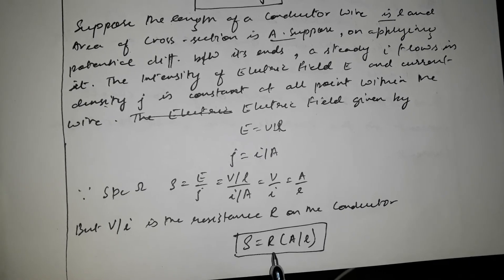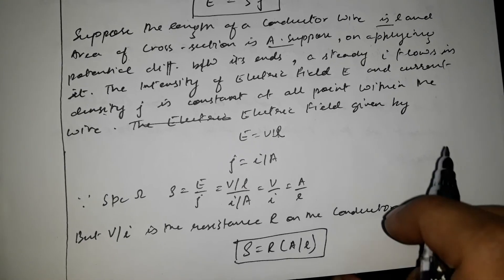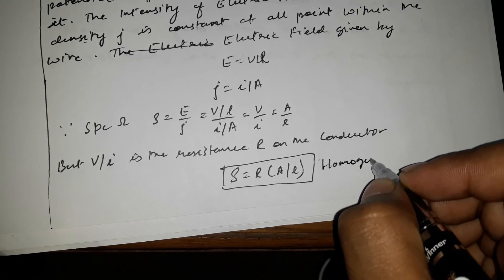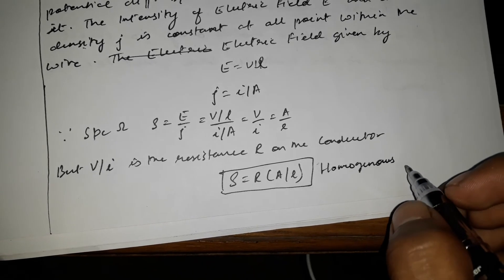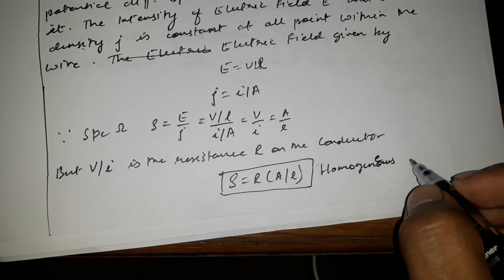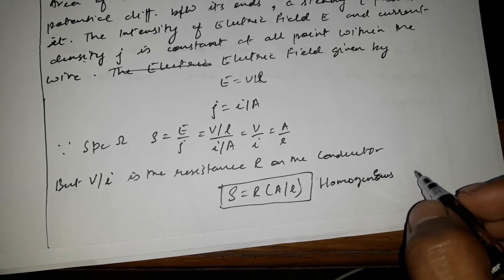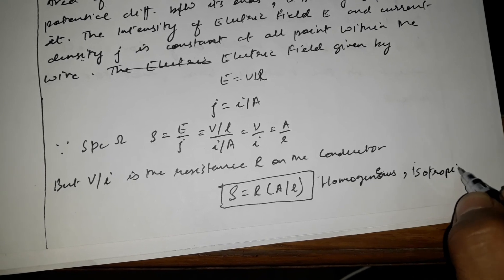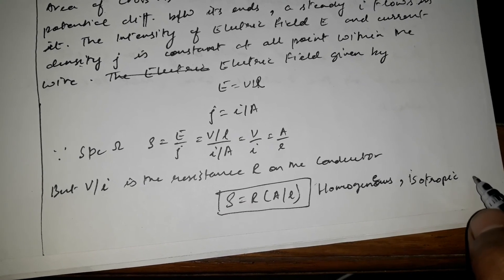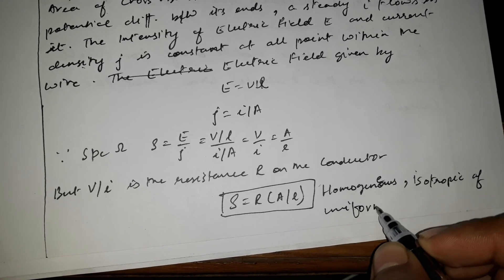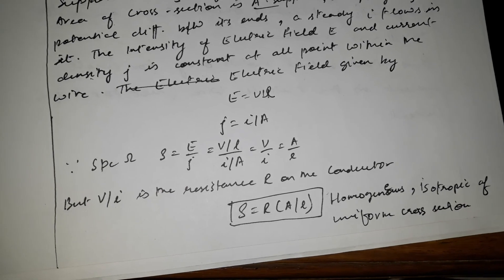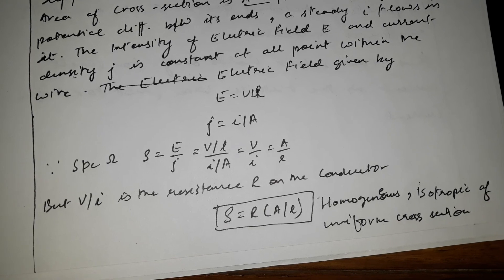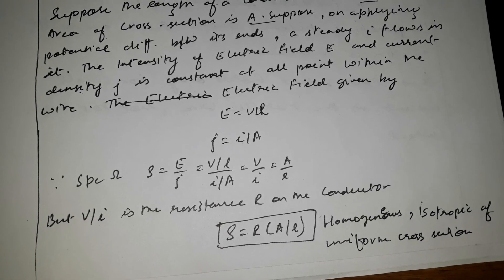Therefore it becomes rho equals R into A by l. This equation is valid only for homogeneous and isotropic conductors of uniform cross-section and subjected to a uniform electric field.